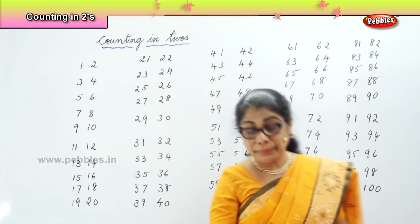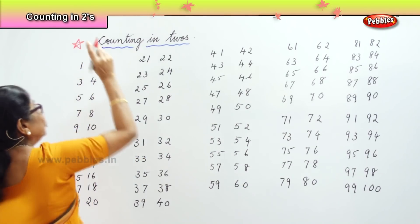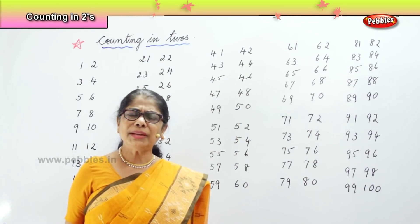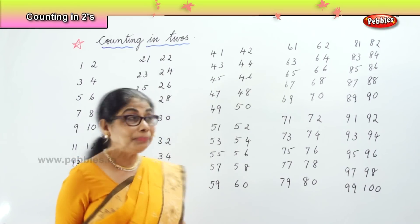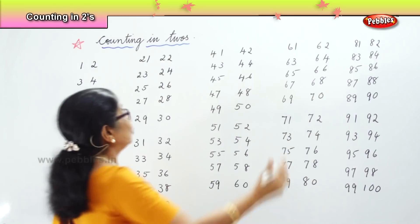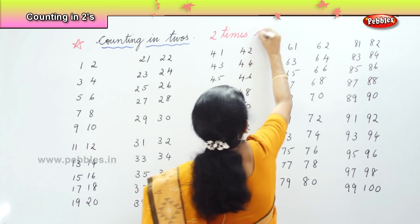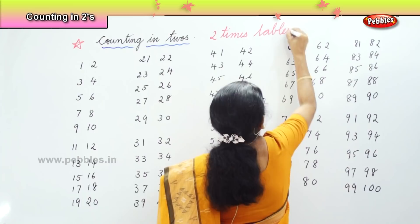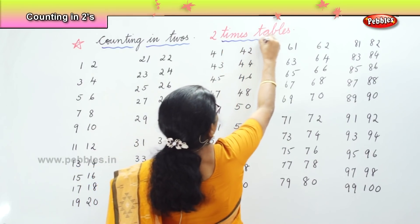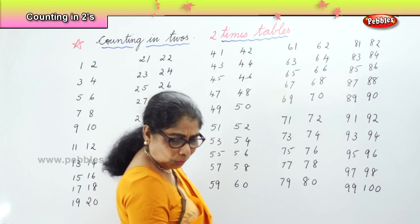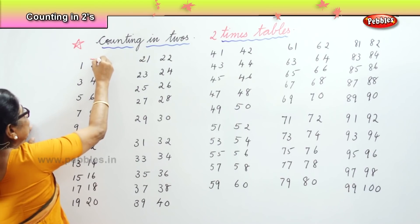What are we doing? Counting in twos. Now, what I have done for you here is magic numbers. What are magic numbers? You have already done the two times tables here — counting in twos. What we have done is two times tables. Let's look at it very carefully.